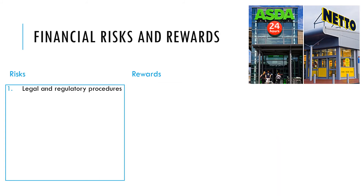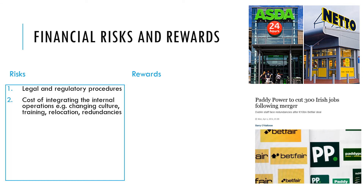Now let's look at some of the risks. When two large businesses come together through a merger or takeover, the government may intervene to assess whether there will be problems with competition — if the combined business could harm customers, it may be blocked. For example, when Asda merged with Netto, the government forced Asda to sell off some stores. The second risk is the cost of integrating the businesses — cultural change, new training, staff relocation, or redundancies. When Paddy Power merged with Betfair, there were a number of redundancies, which was a cost to the business.